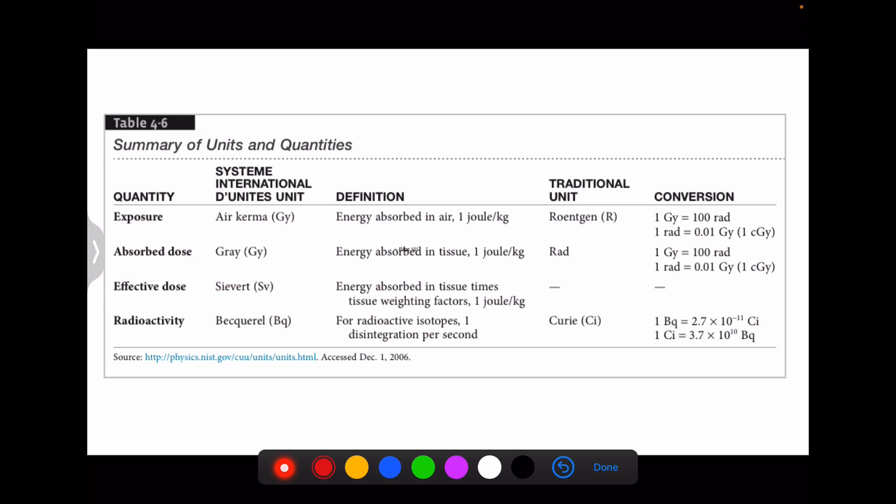Coming to the summary of energy and exposed doses. There are four things which occur: first is absorption of radiation, second is exposure time, third is effective dose, and fourth is radioactivity. There are certain units in which they are calculated. That is exposure in air kerma - it is the energy absorbed in air. Then absorbed dose which is the absorbed energy in tissues. Then effective dose is the energy absorbed in tissue times tissue weighing factor. And then is radioactivity.